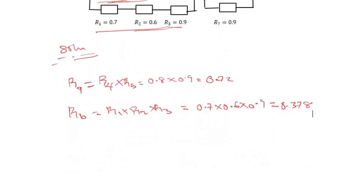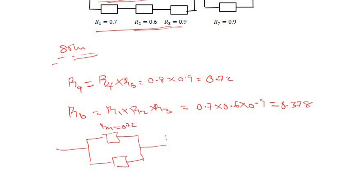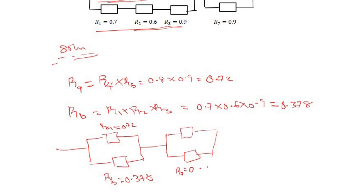Let's draw the reduced system. We now have R_A = 0.72, and R_B = 0.378, representing the reliability of units 1, 2, and 3. We also have R7 = 0.9 and R6 = 0.8 remaining in the network.